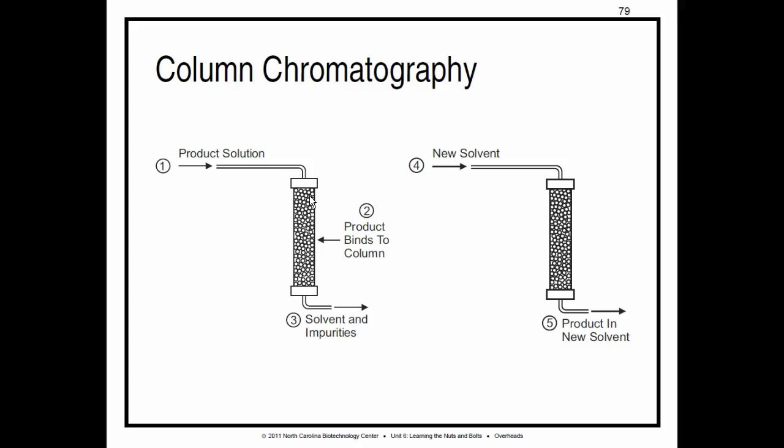The most common type of resin used in chemical and bioprocessing operations is ion exchange resin. And that basically means that if you're positive, you attract negatives and vice versa. So we're going to end with chromatography there.